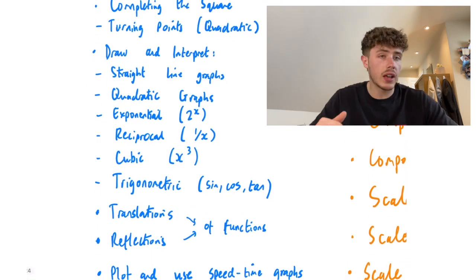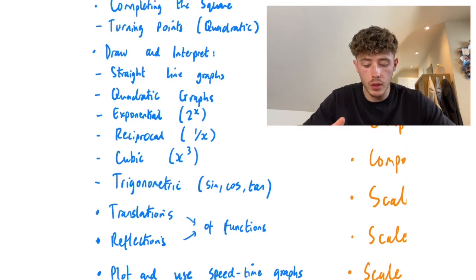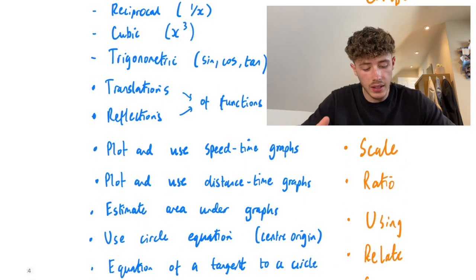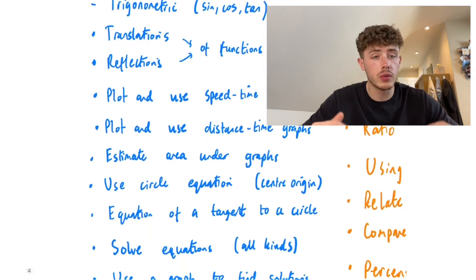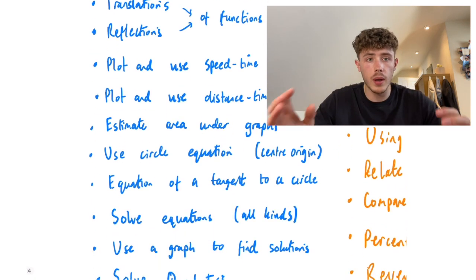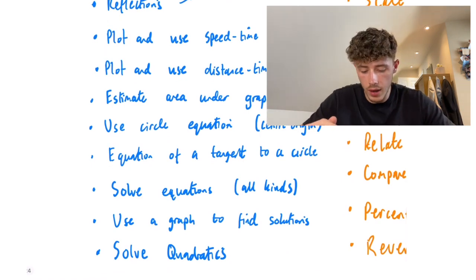Translations and reflections of these graphs and how to show them algebraically. Plotting and using speed time and distance time graphs, estimating the area under the graphs, using the circle equation which is centred at the origin, so x squared plus y squared equals the radius squared, and equation of a tangent to a circle.